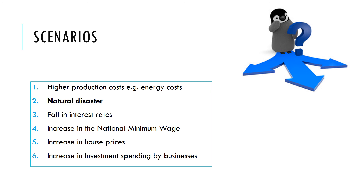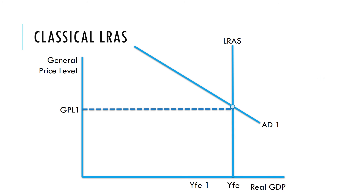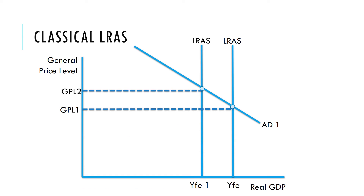What about a natural disaster? A natural disaster would reduce how much the economy could produce, potentially in the long run. This would shift the long-run supply curve to the left — here illustrated using the classical LRAS — resulting in a higher price level and a lower level of output.